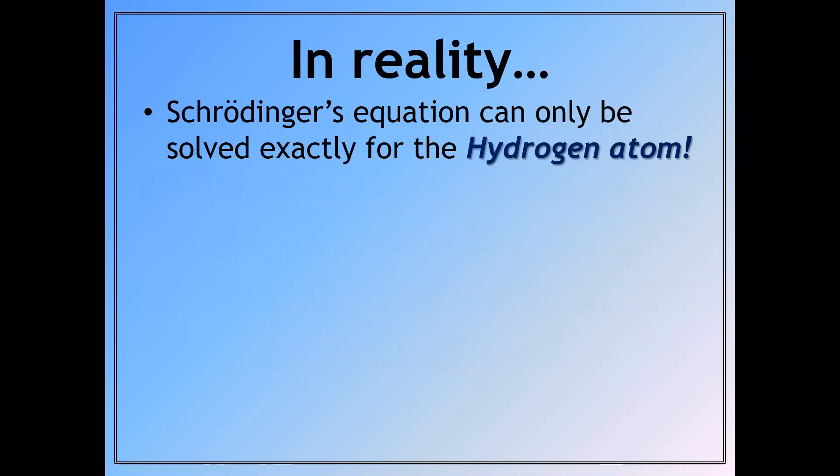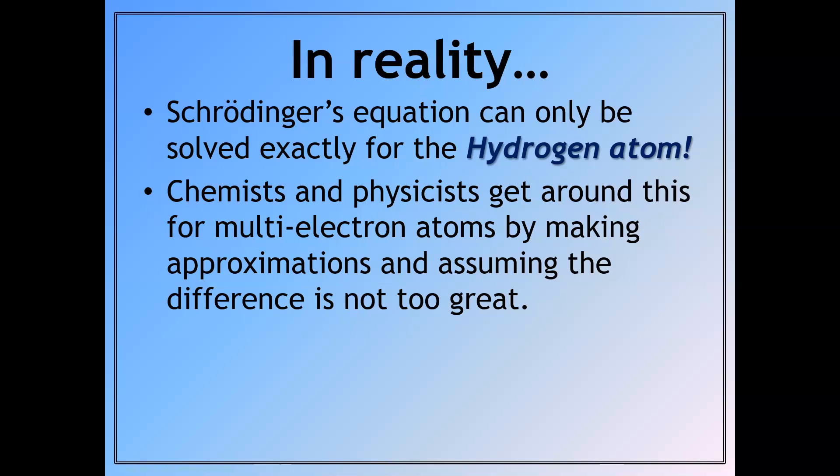And in reality, Schrödinger's equation can only be solved exactly for the hydrogen atom. But we can make some approximations for multi-electron systems, and we can assume that the difference is not too great.